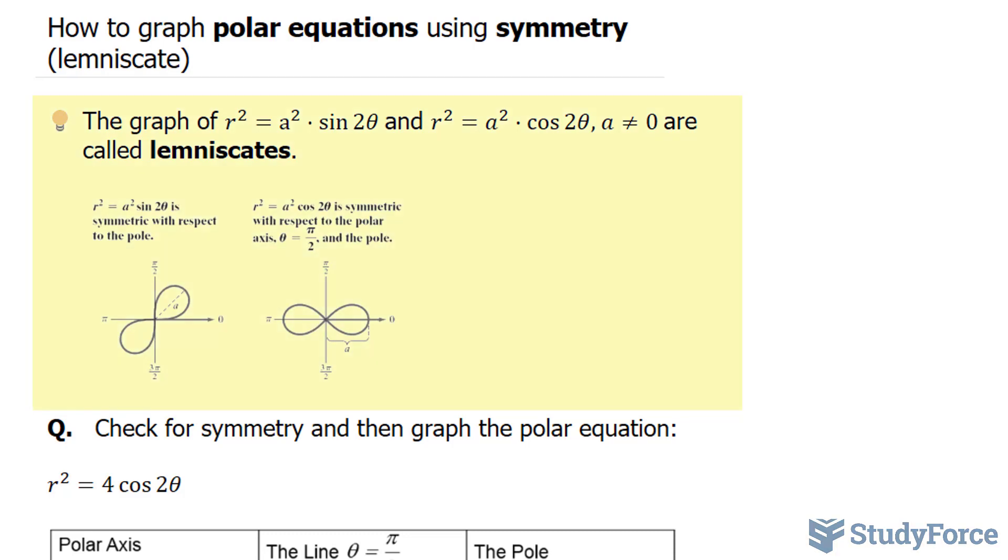The graph of r squared equals a squared times sine 2 theta and r squared equals a squared times cosine 2 theta, where a cannot equal zero, are called lemniscates.